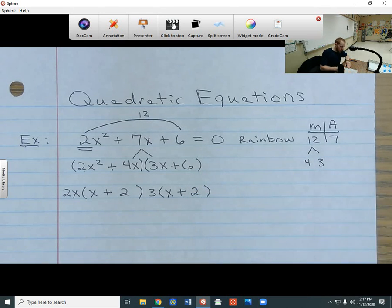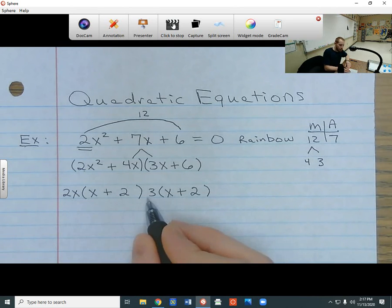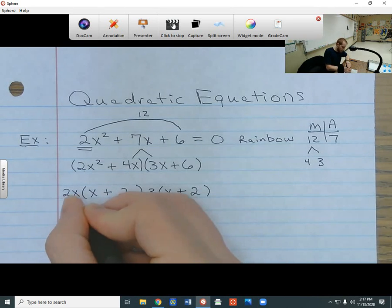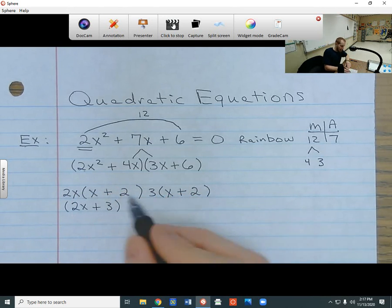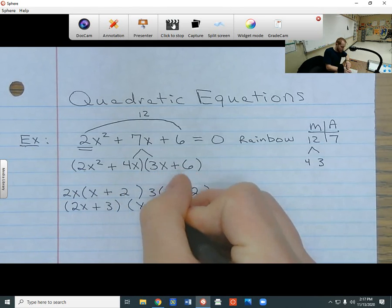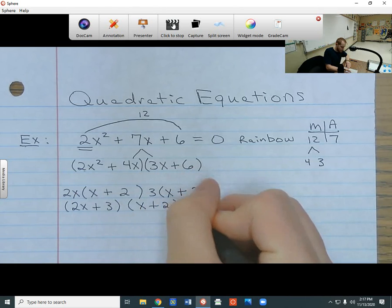So now, notice what I have on the outside. I have a 2x and I have a 3 on the outside. But what's left on the inside? Well, it's the x plus 2. And these are actually duplicating. So they're going to actually merge into one copy when we get done with this. The outside parts I put together, so I'm going to have 2x plus 3. And then the x plus 2 and the x plus 2 are going to merge into one copy. So now we've factored the polynomial.